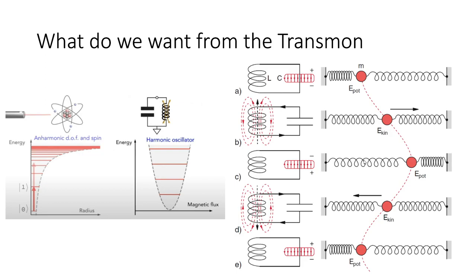Here is a page full of material, and I'll try to explain why we want what we want from a transmon. We have all seen this picture from quantum mechanics — it has energy states: the ground state and the first excited state. We know that this spectrum is anharmonic.